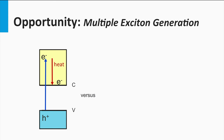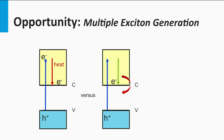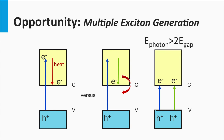Multiple exciton generation, abbreviated with MEG, is another approach which can accomplish the excitation of more than one electron-hole pair per photon. The difference with spectral down conversion is that all fundamental energy conversion steps occur in the PV active layer. In a normal semiconductor material, a high energetic photon has some rest energy which is not used to excite the electron — this excess energy is usually lost as heat. In the MEG approach, this rest energy is transferred as a quantized energy package within the material, where it can excite a second electron into the conduction band.